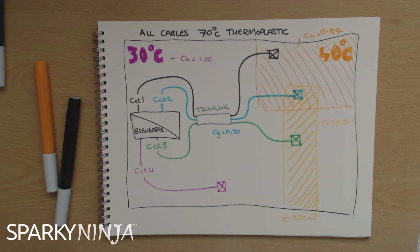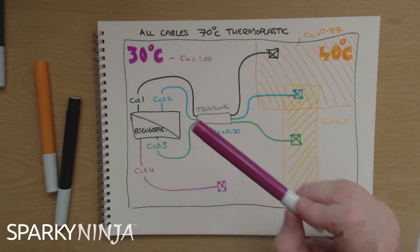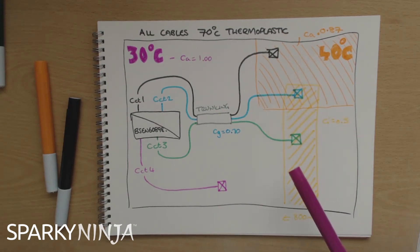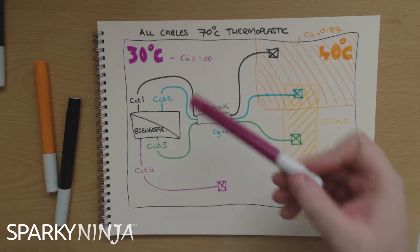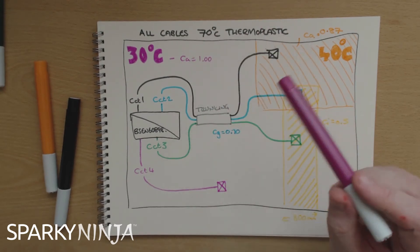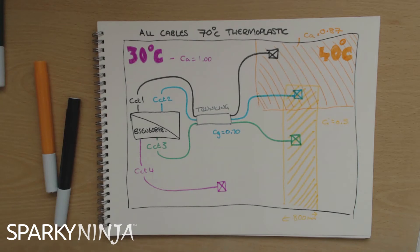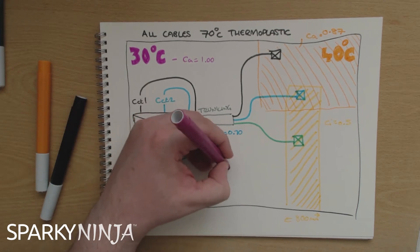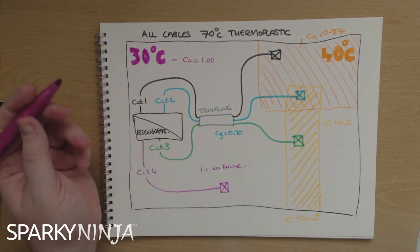We've got these different factors for different reasons, but what I want to cover is what do we do with them for each individual circuit. For circuit one, do I apply factors of 1, 0.7, and 0.87? For circuit two, 1, 0.7, 0.87, and 0.5? For circuit three, 1, 0.7, and 0.5? For circuit four, just 1? If I do that, I'm going to waste my design. Circuit four is straightforward — one factor of 1, meaning no effect, so Iz equals In.